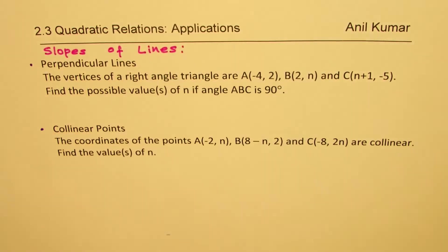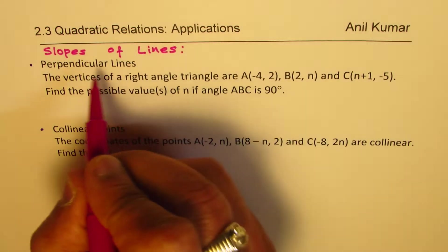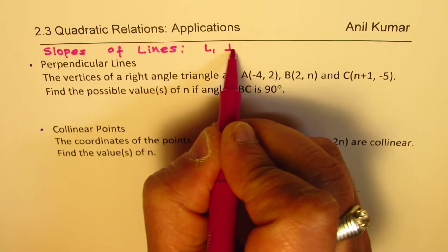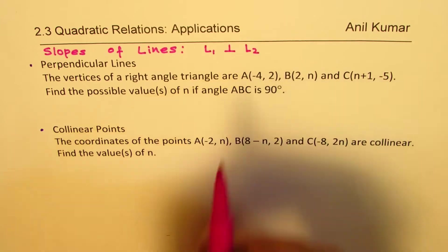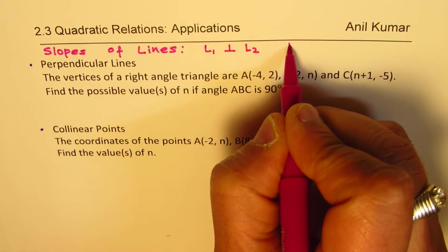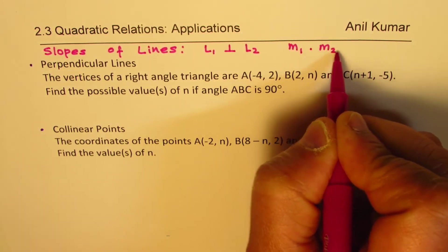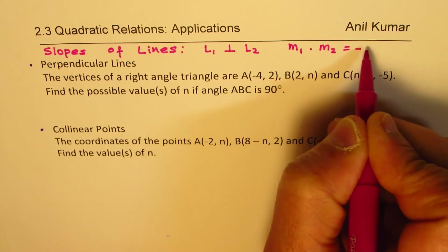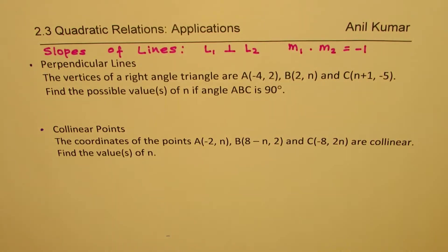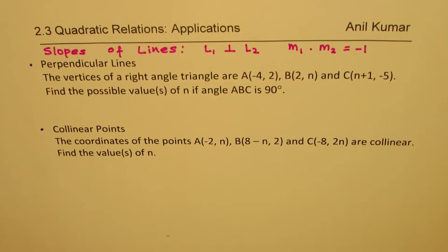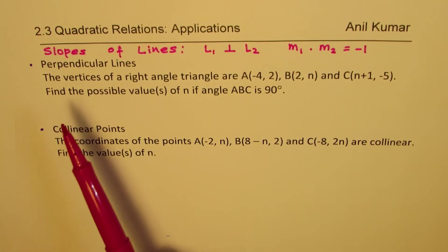Based on slopes of lines, we know perpendicular lines are those where, if line 1 is perpendicular to line 2, the slope of line 1 times slope of line 2 should be minus 1. So that is the concept about perpendicular lines.